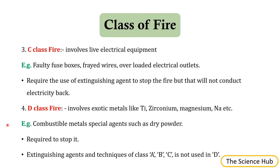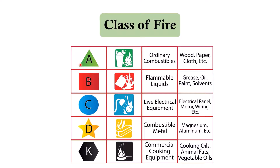Class D fires involve exotic metals like titanium, zirconium, magnesium, and sodium. Special dry powder agents cause these fires to be extinguished, and different chemicals are required for different types of metals. Extinguishing agents and techniques used for Class A, B, and C are not used for Class D. Class K fires involve cooking oils, animal fats, and vegetable oils, all caused by commercial cooking equipment. The chart summarizes: A — ordinary combustibles like wood, paper, cloth; B — flammable liquids, grease, oil, paint; C — electrical panels, motors, wiring; D — magnesium, aluminium; K — cooking oils and fats.